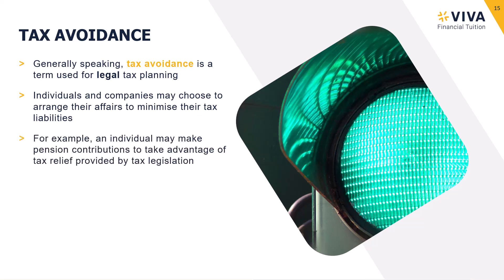A good example, if we consider an individual, is if they make a pension contribution during a particular tax year, they will pay less tax. The reason for that is the legislation says that pension contributions reduce taxable income, and with reduced taxable income you will pay less income tax. That is choosing to arrange your affairs in a way to minimise your tax liabilities, but it is completely within the legislation and therefore is legal tax planning, categorised as tax avoidance rather than tax evasion.